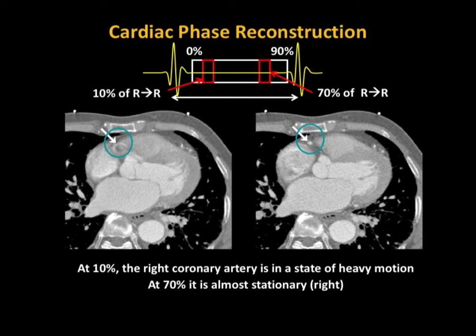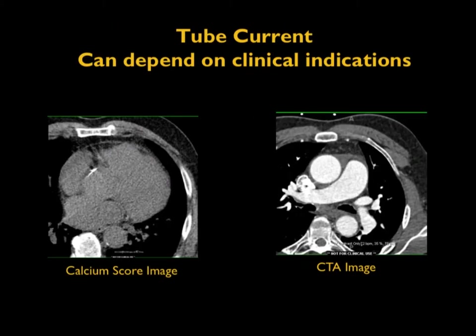In cardiac CT, the choice of technique depends on the type of clinical indication. A clear example is that tube current can be adjusted based on the protocol used. The calcium score image requires very low tube current because calcification shows up even when the background is noisy, making calcium scoring one of the lowest-dose techniques.